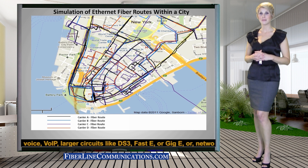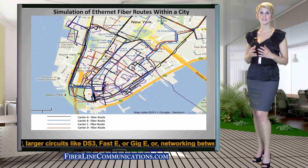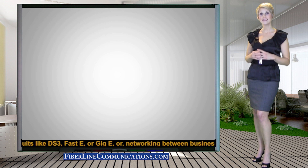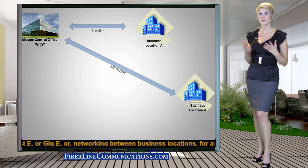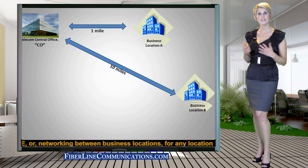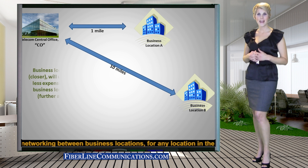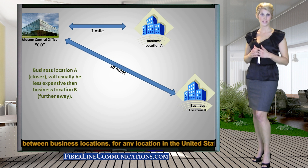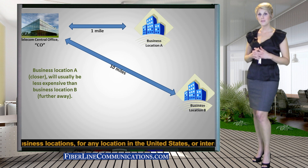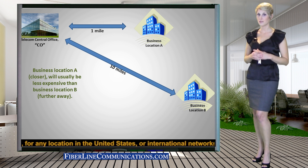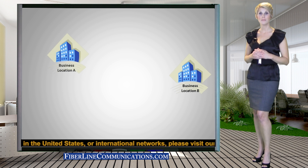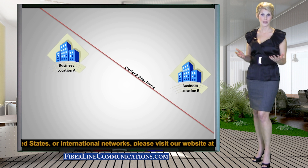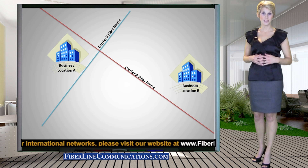Metro Ethernet bandwidth pricing is established to a large degree by determining the distance between a telecom provider's central office that is fiber-fed and the business location where the circuit terminates. Another important variable involved in determining Metro Ethernet bandwidth pricing is the number of telecom providers who can supply Metro Ethernet to a specific location.